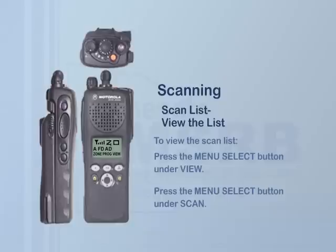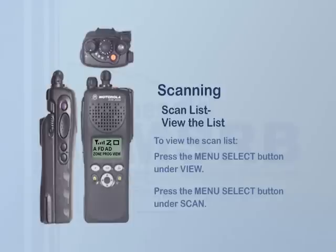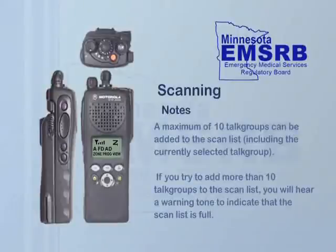To view the scan list, press the menu select button under View on the LCD, then press the menu select button under Scan. The display shows the programming mode status indicator, a flashing rectangle. Repeatedly press the left or right side of the navigation button to see which talk groups are members of the scan list. The scan icon associated with a talk group indicates it is a member of the scan list. Remember, a maximum of 10 talk groups can be added. If you try to add more than 10, you will hear a warning tone indicating the scan list is full.